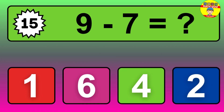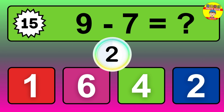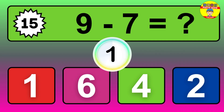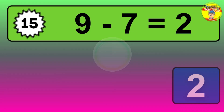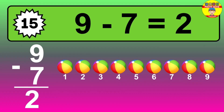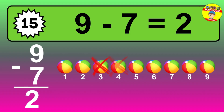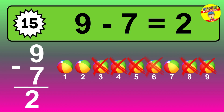Question 15. 9 minus 7 equals what? The answer is 9 minus 7 is 2. Let's count it: 1, 2.